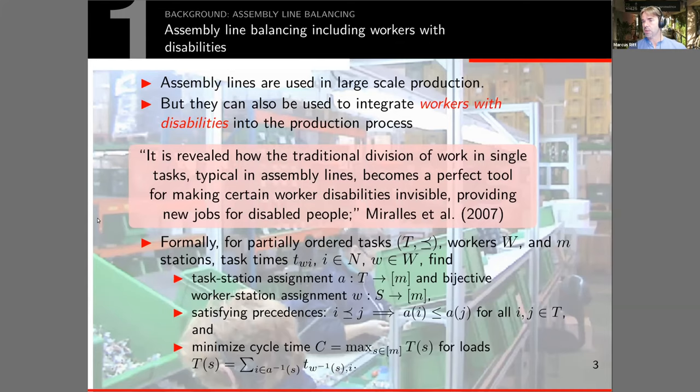Formally we have a partially ordered set of tasks, a set of workers and stations. We have task times which depend on the worker and the task itself, and it's also possible that certain workers cannot execute certain tasks. What we want to find is a task station assignment, assigning tasks to stations satisfying the precedence constraints.